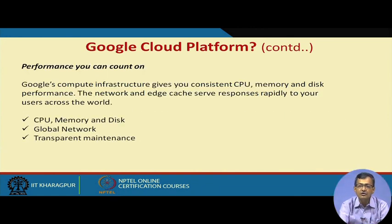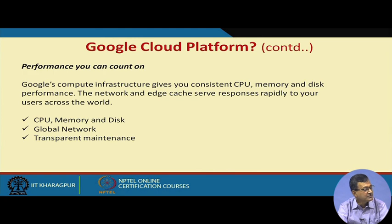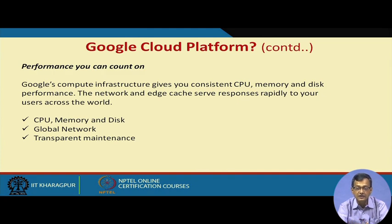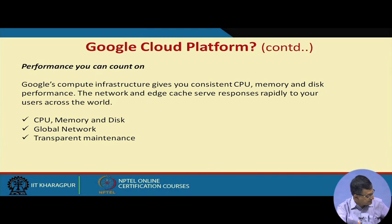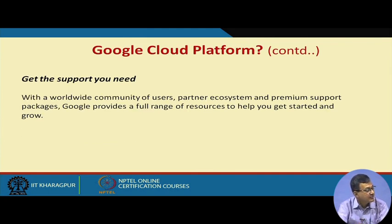Google also claims good performance and good return on investment. Google's compute infrastructure gives you consistent CPU, memory, and disk performance. The network and edge cache respond rapidly to users across the world. So if your users are spread globally, they also get the advantages of Google's scale — in terms of CPU, memory, disk, network, and transparent maintenance of the infrastructure or your application.